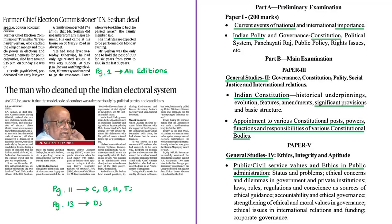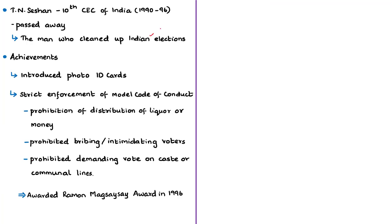Next, let us see two news articles regarding the former Chief Election Commissioner, T.N. Seshan, who passed away yesterday. Mr. T.N. Seshan was the 10th Chief Election Commissioner of India from 1990 to 1996. He was a Tamil Nadu Cadre IAS officer who later worked in the Central Cadre and became the 10th Chief Election Commissioner in 1990. He is best known as the man who cleaned Indian elections. During his tenure, he reformed the entire Indian electoral system by largely ending the electoral malpractices that happened during elections.